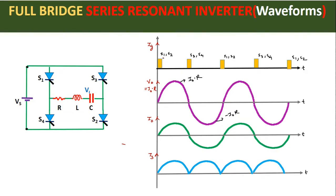Now we will understand the output waveforms of this full bridge series resonant inverter. At time T = 0, we fire S1 and S2 SCRs; at that time S3 and S4 are in the OFF condition and act as open circuit. When S1 and S2 start conducting, we get a positive current pulse. Since we are using a resistive load, the load voltage and load current will be in phase with each other, so the shape of the load voltage and load current waveforms will be the same — only their maximum values differ, since V0 = I0 × R.